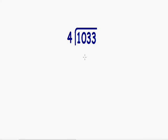Welcome to my second example on how to divide numbers. In this example, I'm going to show you what to do when your remainder is not 0. At the end of the problem, our remainder is not going to be 0, and I'm going to show you how to finish the problem when that happens. So here we have 1,033 divided by 4.